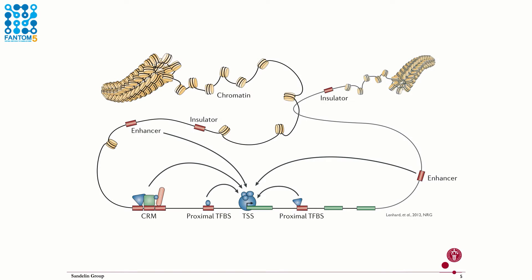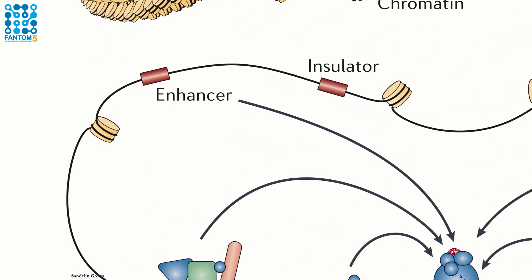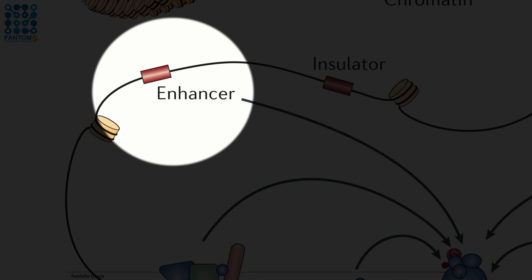When examining expression data like CAGE at transcription start sites, we only detect the effects of regulation, not the underlying mechanism. What if we could see the enhancers as well?